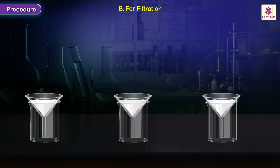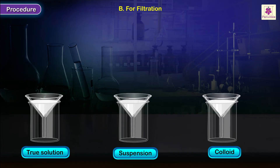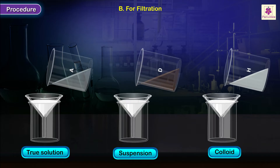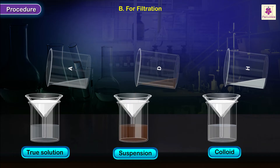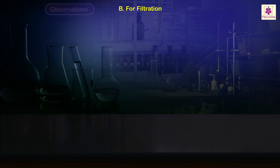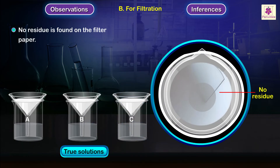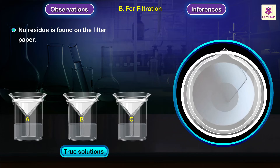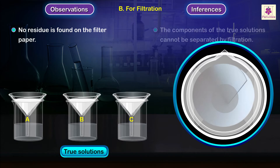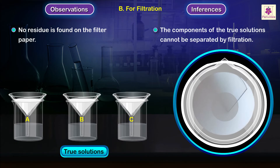For filtration, take all three types of solutions in labelled beakers and pass them through filter paper. Observations and inferences: No residue is found on the filter paper when the solutions of mixtures A, B and C are passed through it. The components of the true solutions cannot be separated by filtration.